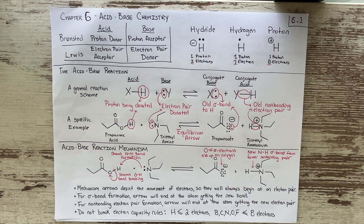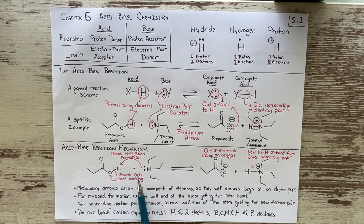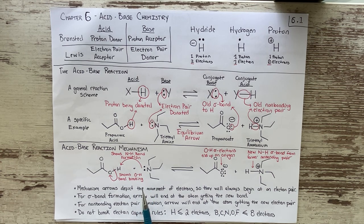We can represent all of this mechanistically. This is the acid-base mechanism drawn in one direction, and it will introduce you to reaction mechanisms — representing new bonds forming and old bonds breaking between two or more molecules. Mechanism arrows, like the arrows in resonance structures, always depict the movement of electrons. They always begin at an electron pair, which can be a bonding electron pair or a non-bonding electron pair.